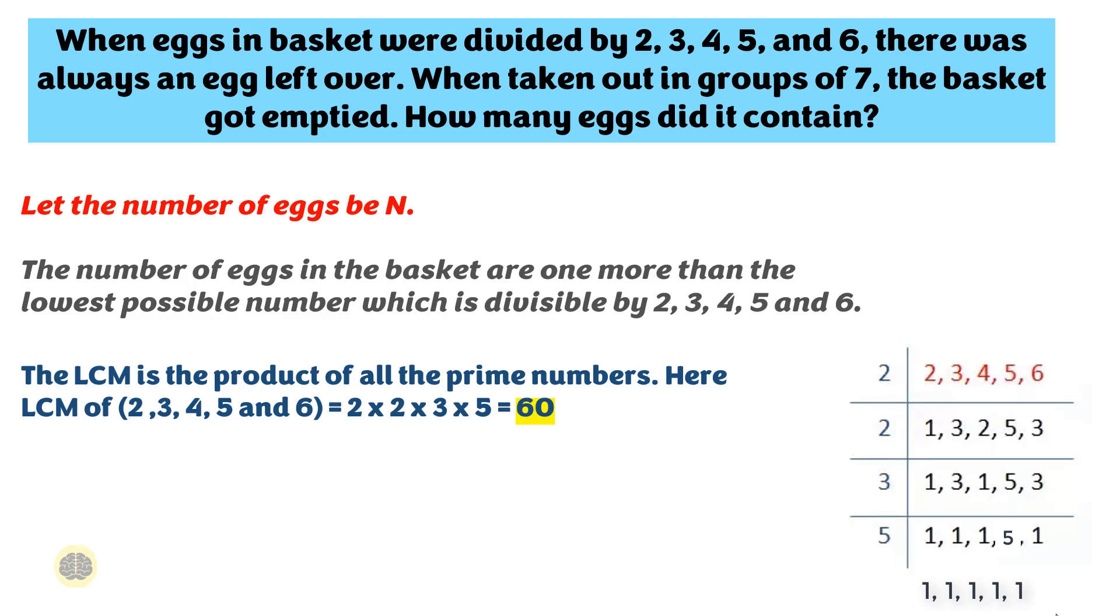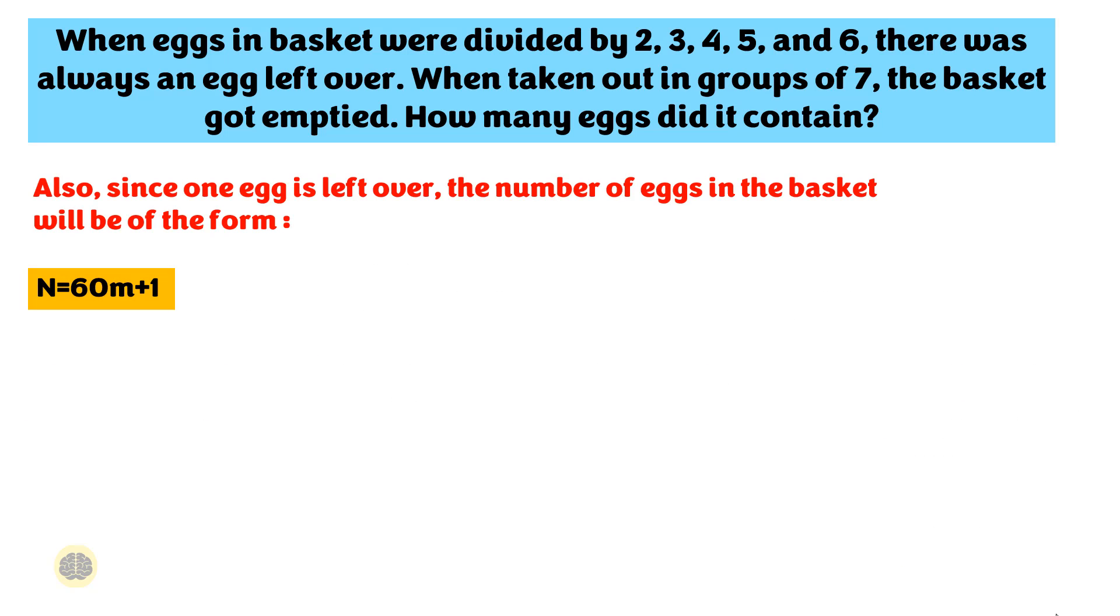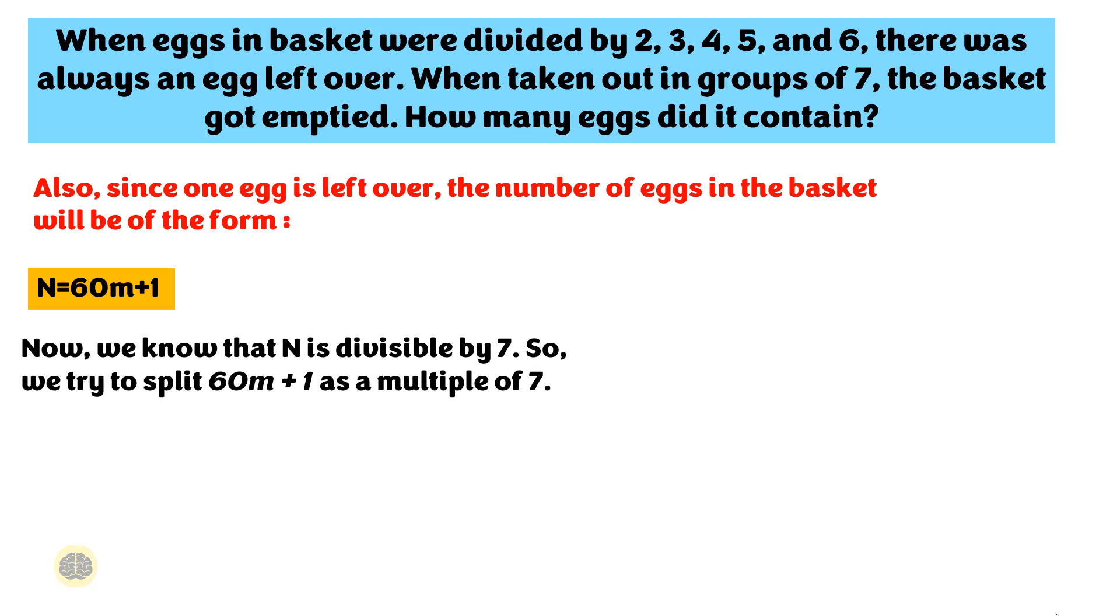Since one egg is left over, the number of eggs in the basket will be of the form N equals 60M plus 1 where M is any natural number and M must not be equal to 0. Now we know that N is divisible by 7. So we try to split 60M plus 1 as a multiple of 7. So N equals 7 times 8M plus 4M plus 1. 4M plus 1 is the remainder part.